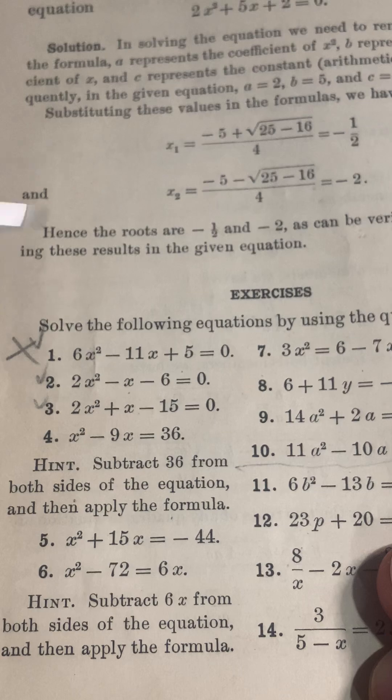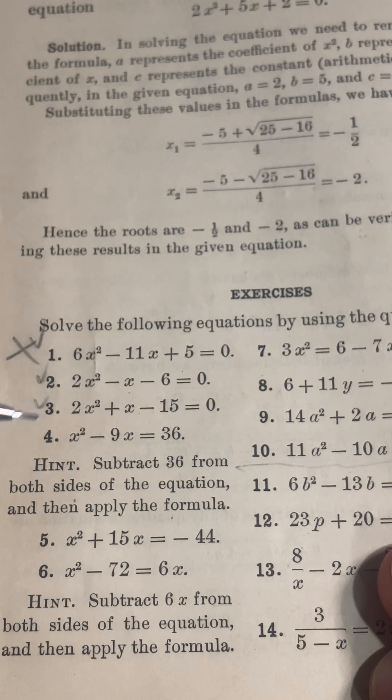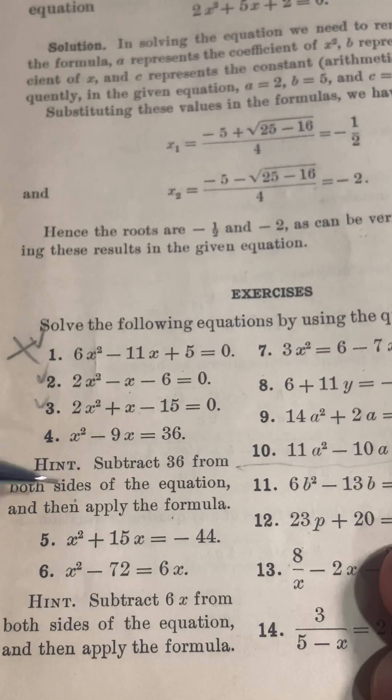So number four says x squared minus 9x equals 36 and they even give us a hint. In modern books I don't think they'd give us this big of a hint. So subtract 36 from both sides of the equation and then apply the formula.